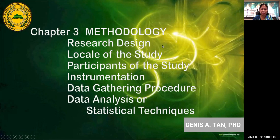The six sub-parts are: research design, locale of the study, participants of the study, instrumentation, data gathering procedure, and data analysis or statistical technique. For the research design, you need to understand that your research design can only be determined if you already have a very clear statement of the problem. It should match your statement of the problem, and your objectives should also match your research design.